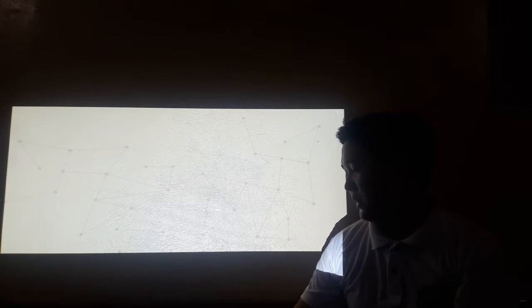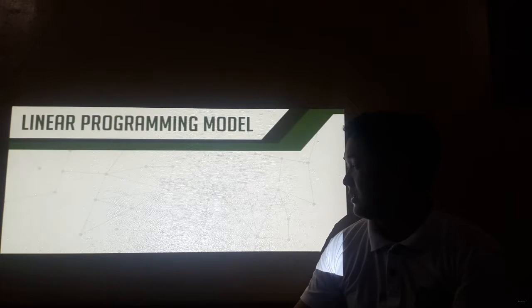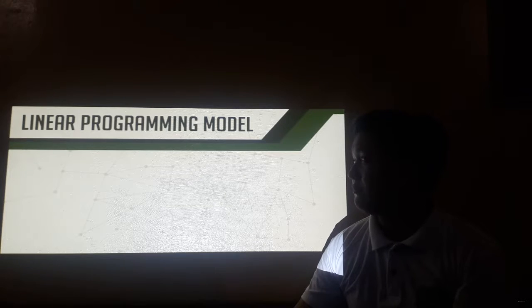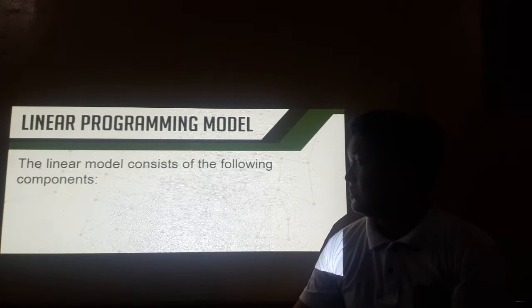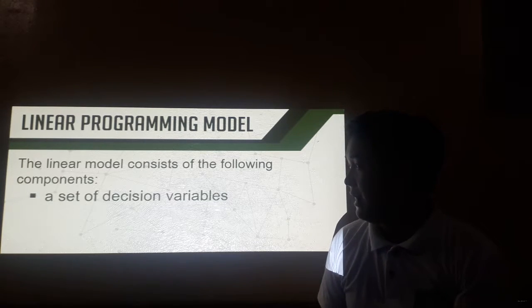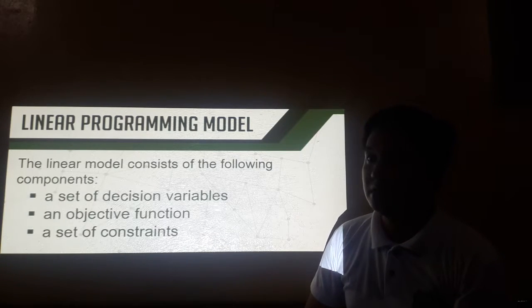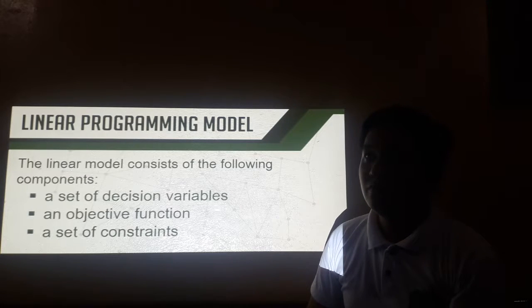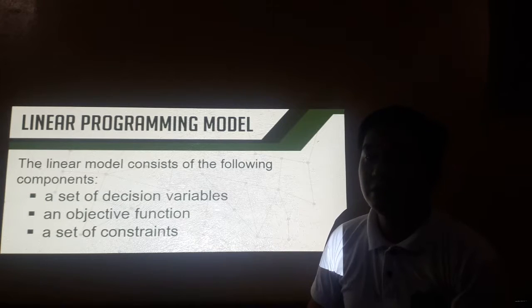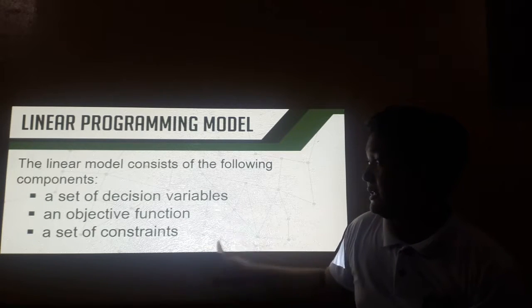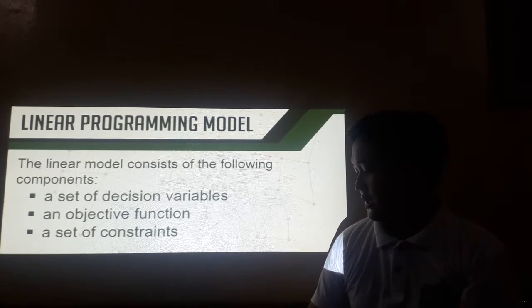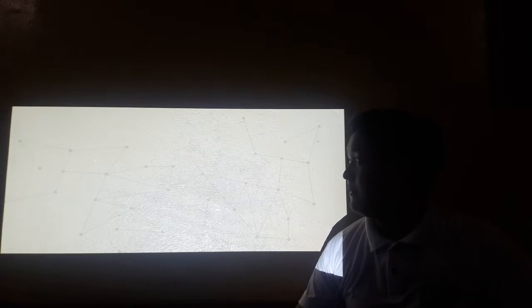Let's start with some components that we need to take into consideration in every linear programming problem. First, we need to have a set of decision variables, an objective function, and a set of constraints. When we try to solve each linear programming problem, we'll be able to identify these three components.